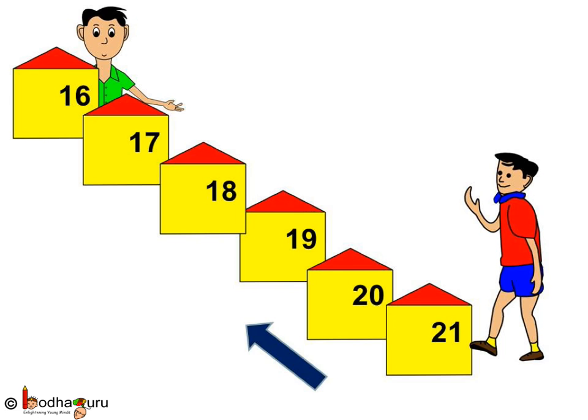Aman lives in house number 21. And his friend Anand lives in house number 16. So, when Aman goes to Anand's house, he has to cross which house numbers? 20, 19, 18, 17. And then, he can reach the house number 16, which is Anand's house. So, we went from 21, 20, 19, 18, 17, 16. This is backward counting.